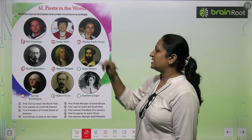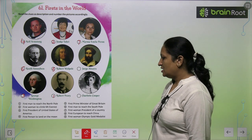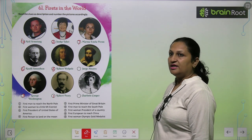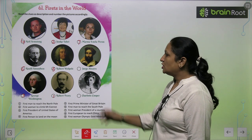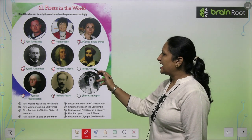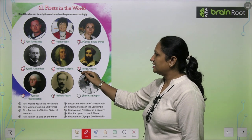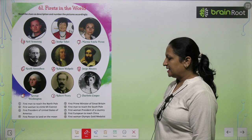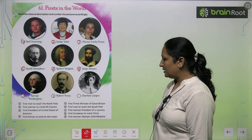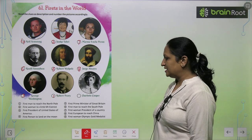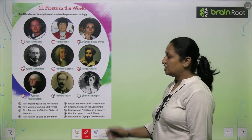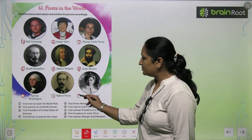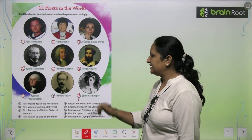First woman President of our country — she was María Estela Perón. So this is number 7. First European to reach China — he was George Alvares. So aap yaha pe number 8 likhenge. And lastly, first woman Olympic gold medalist — was Charlotte Cooper. Is liye aap yaha pe number 9 likhenge.